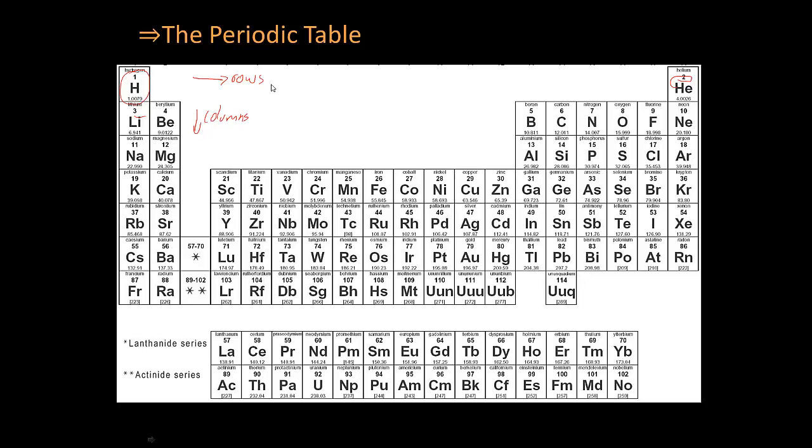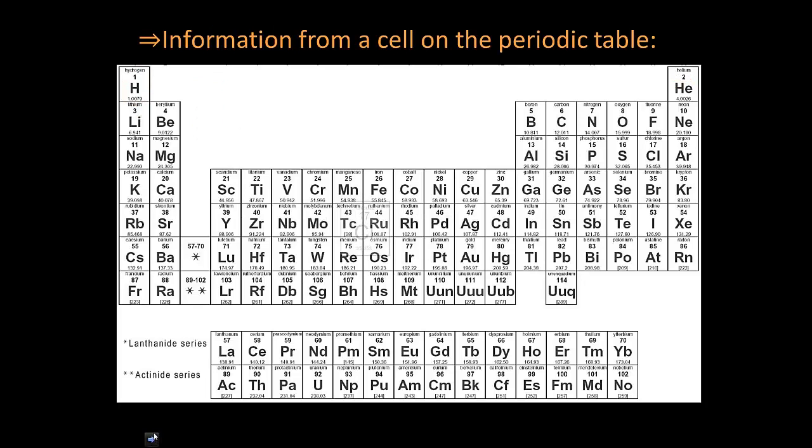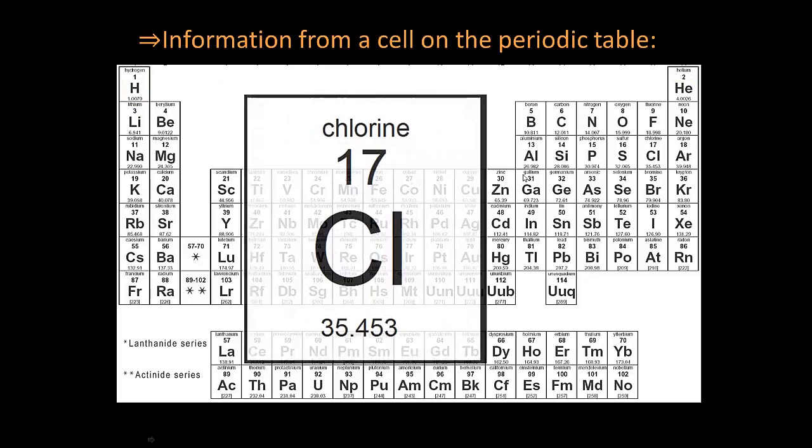Now, I'm not going to get into the whole layout of the periodic table yet, because before we can understand what the whole periodic table means, we have to understand what a cell on the periodic table means. So let's take a look at, say, chlorine.